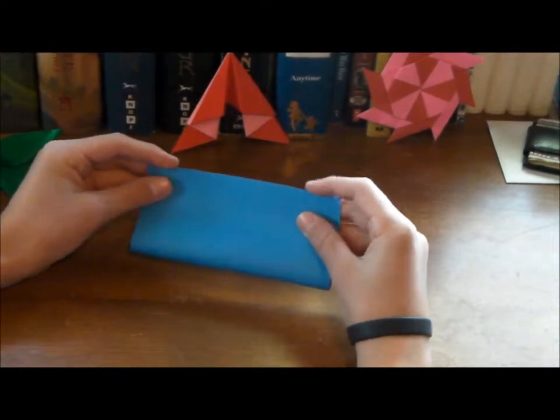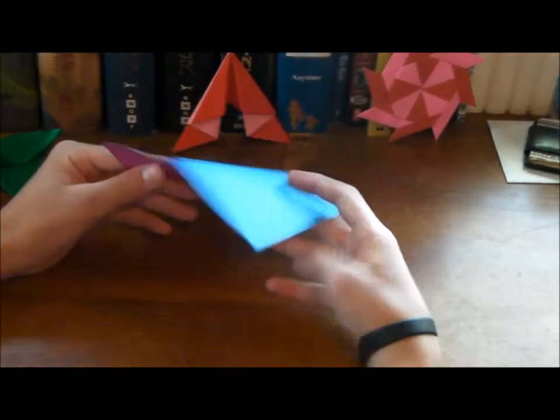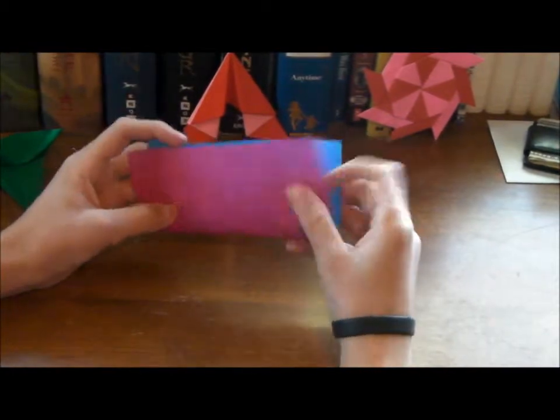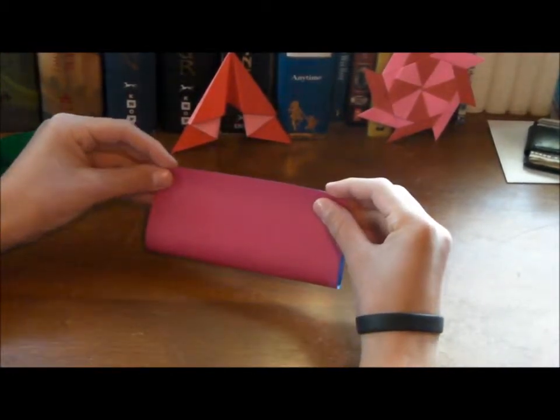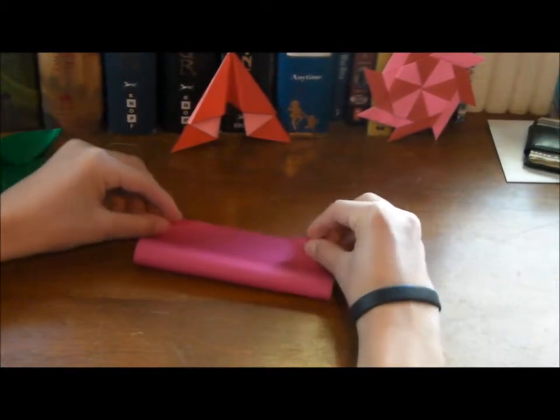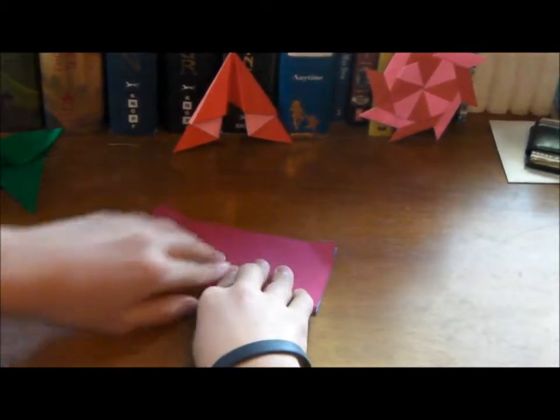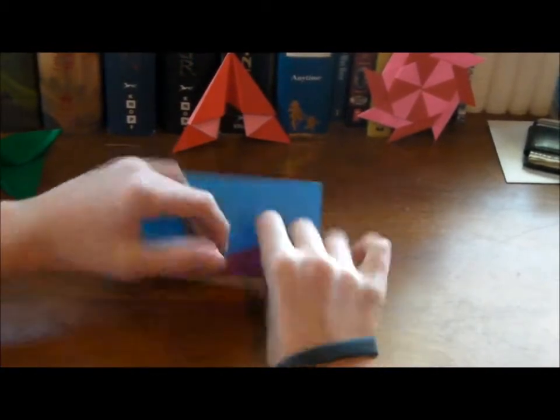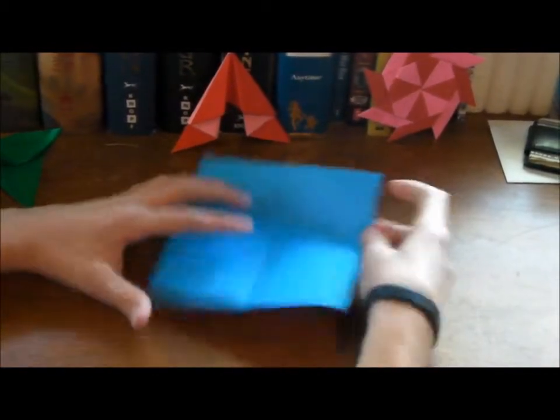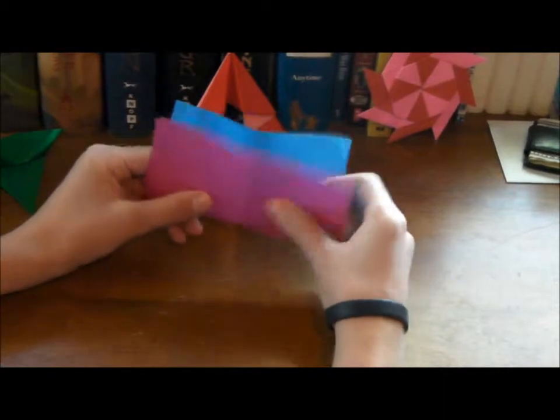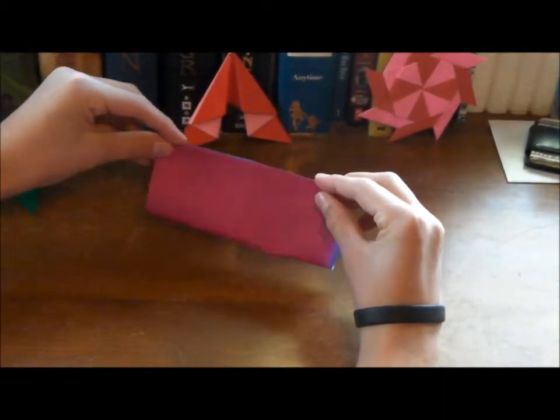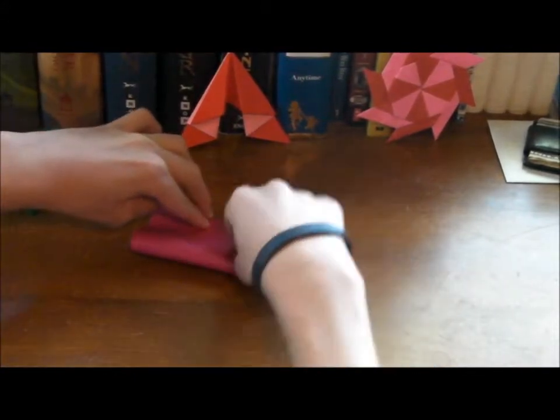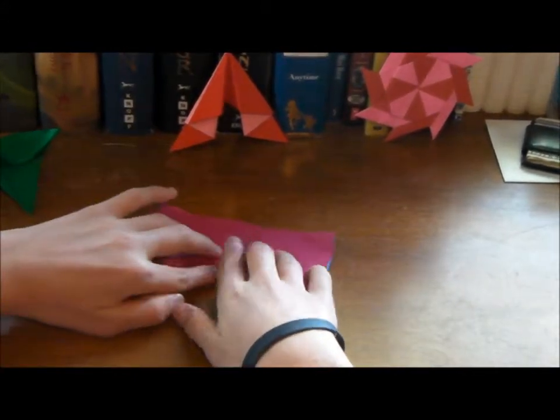So purple is going to be on the outside, but I'm going to fold it this way. Just like so. Unfold and fold half this way. So what we're going to be doing here is making the base for a crane. I mean, a crane.